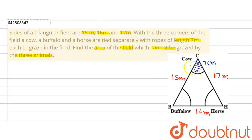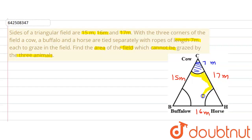The area that cannot be grazed by the three animals is the central region, because the cow tied with a rope of length 7 meter can only graze a certain part of the area. Similarly, a buffalo can only graze a certain part, and a horse can graze a certain part. So the remaining area that cannot be grazed is what we need. We are going to find the area of these three sectors and subtract them from the area of the triangle.